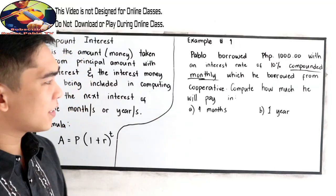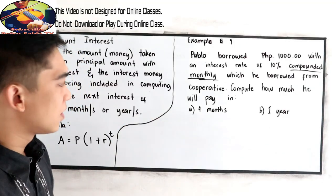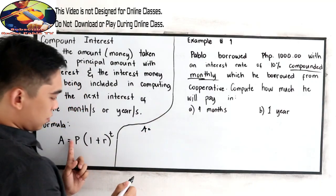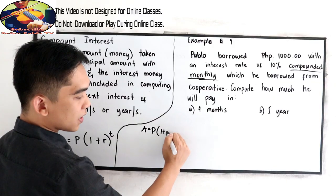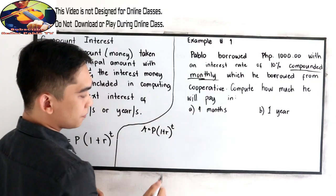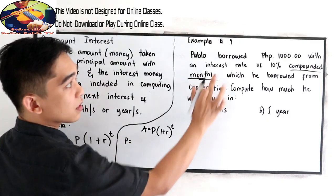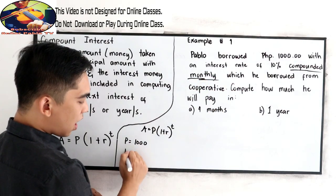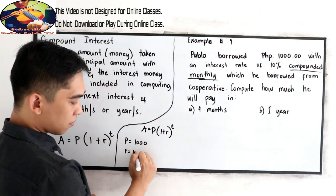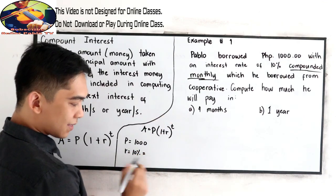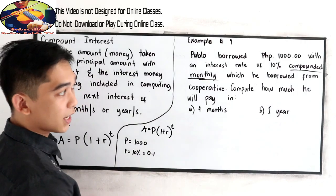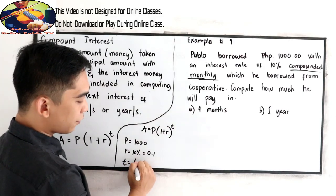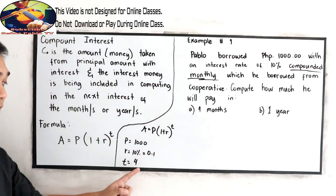So let's find our given. The formula is A is equal to P times 1 plus R raised to T. So our P is 1,000, our R is 10%, in decimal that is 0.1 or 0.10, and our time is 4 months, or simply 4.